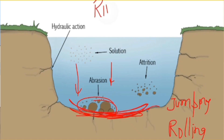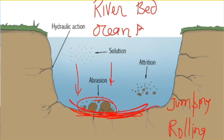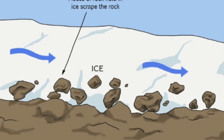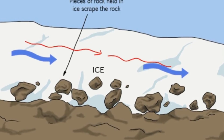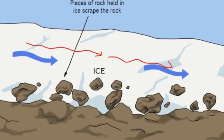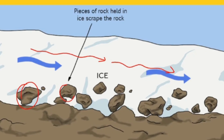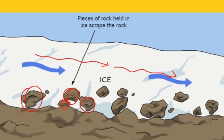As the particles jump and roll, they erode the river bed through friction. Similarly, near the coast, ocean particles erode the ocean bed through the same process. When glaciers move, they also carry larger and smaller rock particles.